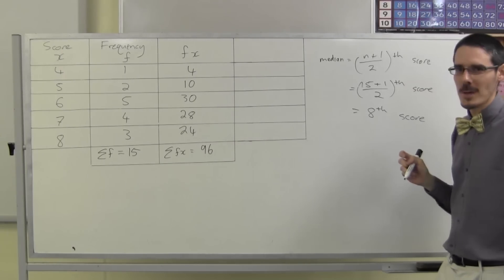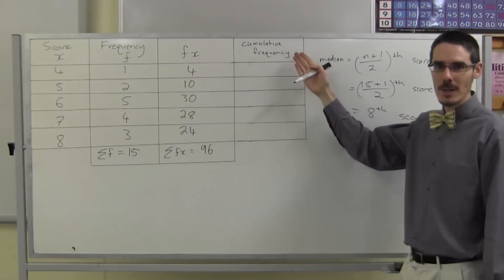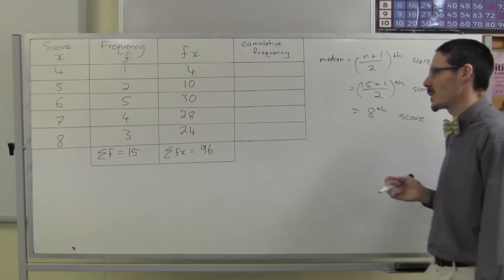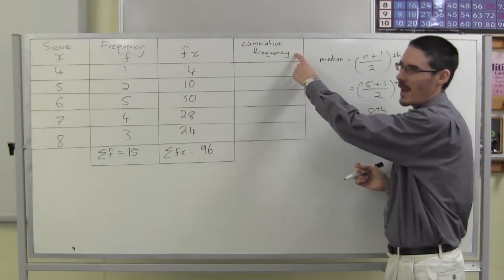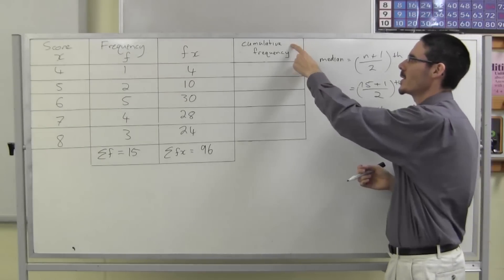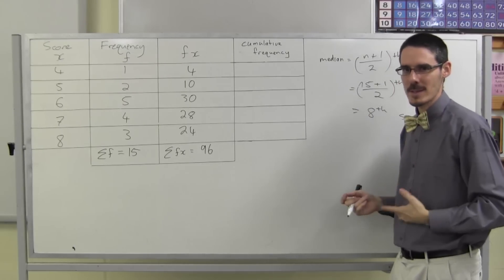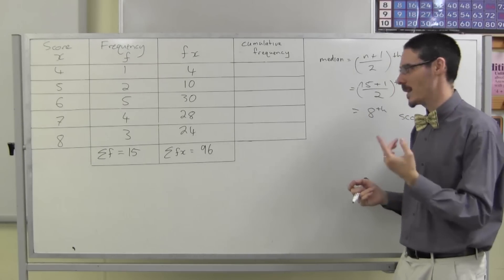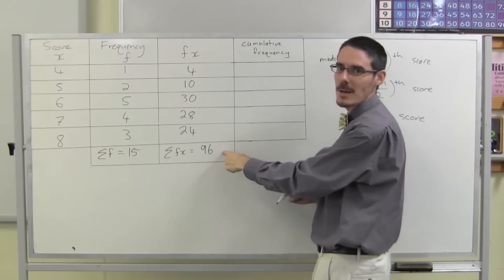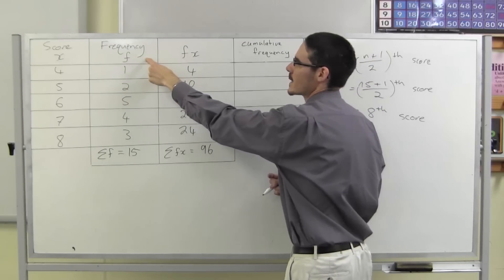That's a bit tricky. So what we're going to do is add yet one more column — cumulative frequency, sometimes abbreviated CF. The word cumulative means you accumulate; you add the frequency as you go. But be careful: if you've just calculated the mean you have an fx column, and you don't want to add those — you want to add the frequency.